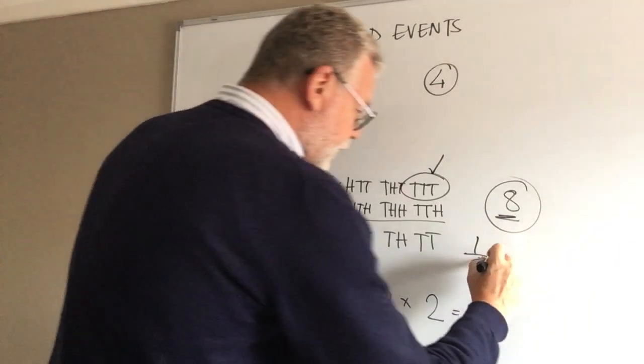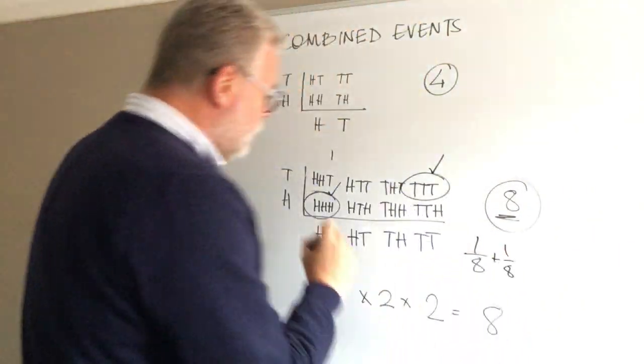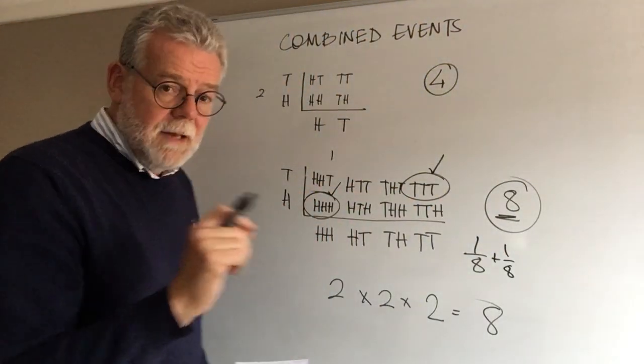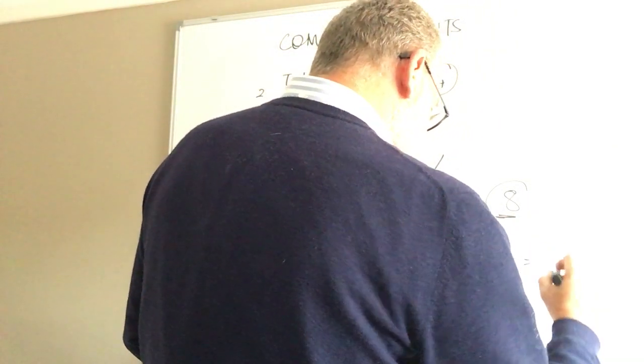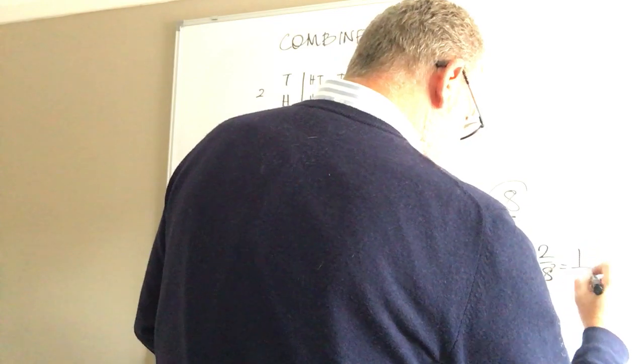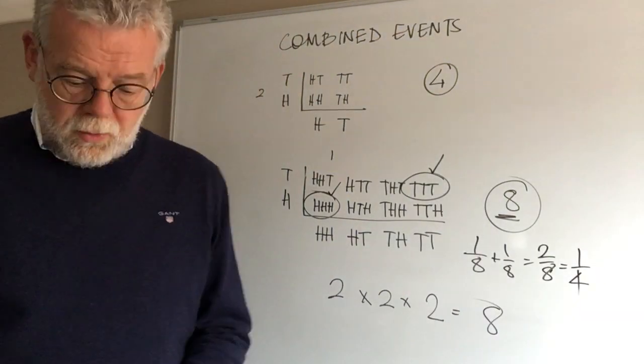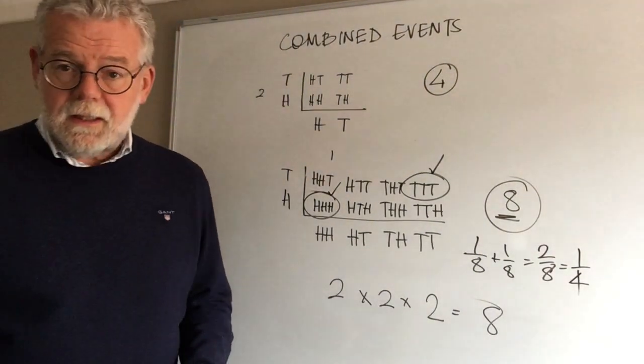If that's one-eighth and that's one-eighth, the probability of them all being the same when flipped is one-eighth add one-eighth, which is two-eighths, which gives us when we simplify it, one-quarter. And that's it.